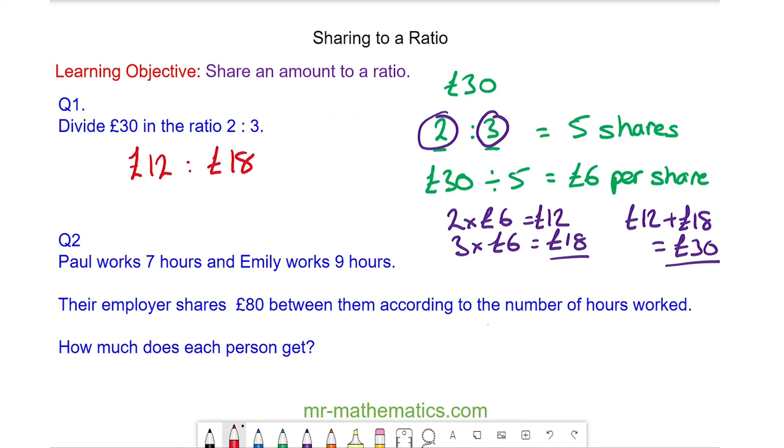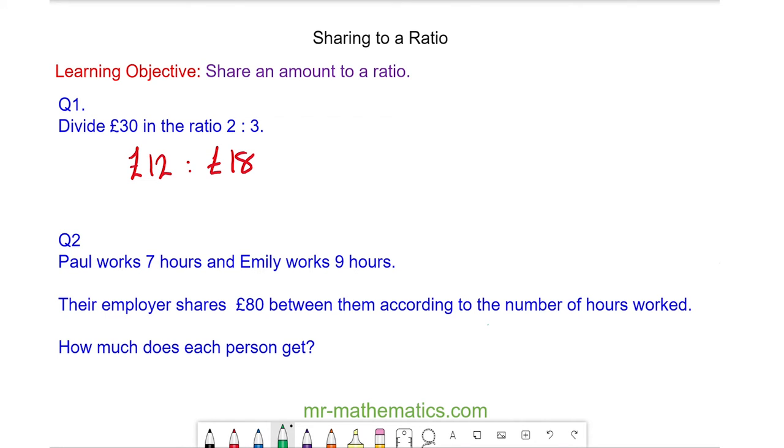Okay, let's try question two. In question two, Paul works seven hours and Emily works nine hours, and their employer shares £80 between them according to the total number of hours worked. How much does each person get?